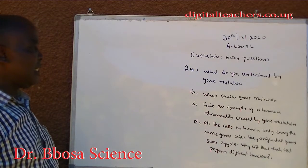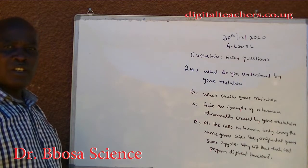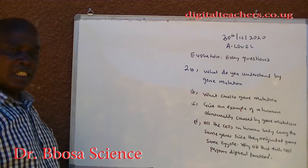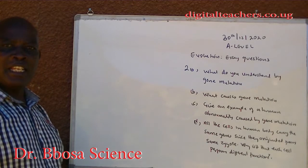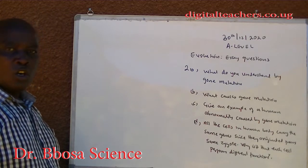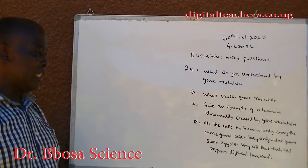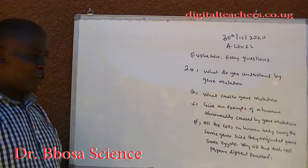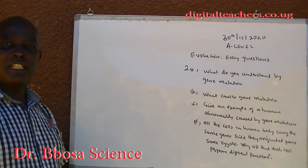Question 2. A. What do you understand by gene mutation? B. What causes gene mutation? C. Give an example of a human abnormality caused by gene mutation. D. All cells in the human body carry the same genes since they originated from the same zygote. Why is it that each cell performs different functions?